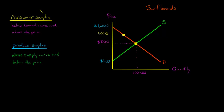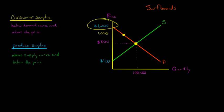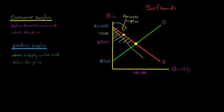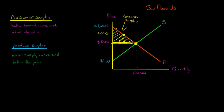How do we calculate all of the consumer surplus? Some people would have been willing to pay $1,100, some $850, but nobody would have been willing to pay $1,200 or more — at $1,200 the quantity demanded is zero. So really, the consumer surplus is this whole triangular area below the demand curve but above the price of $800.